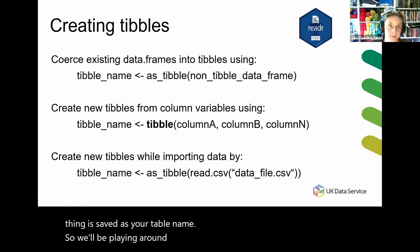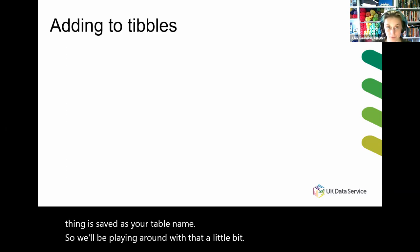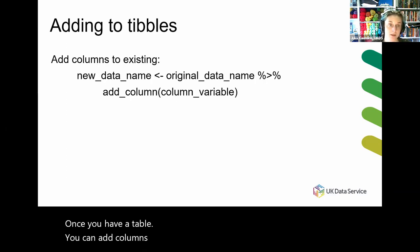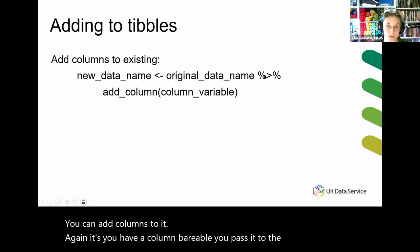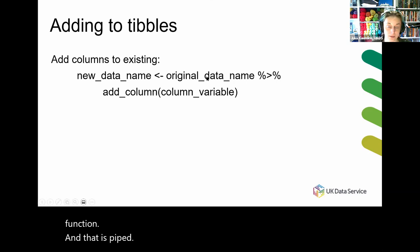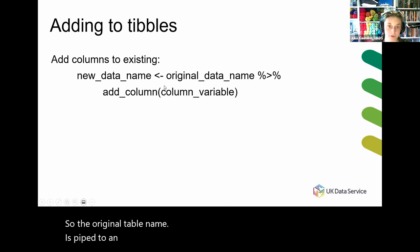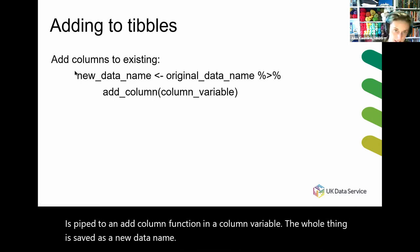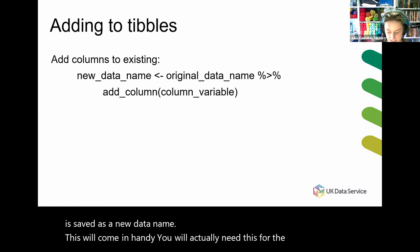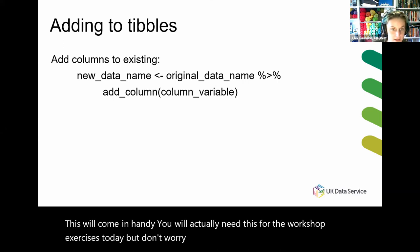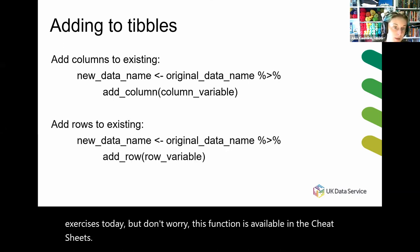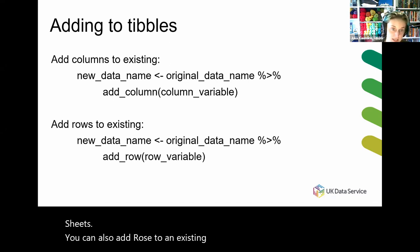We'll be playing around with that a little bit. Once you have a tibble, you can add columns to it. The original tibble name is piped to an add_column() function along with a column variable, and the whole thing is saved as a new data name. This will come in handy — you will actually need this for the workshop exercises today. You can also add rows to an existing tibble in much the same way, but with add_row() instead of add_column().